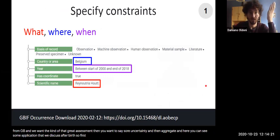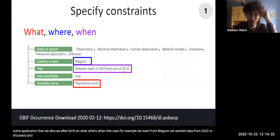So first, specify constraints. What, where, when? In this case, for example, we want to focus on Belgium. We want data from 2000 up to 2018, and all occurrences of genus Reynoutria.